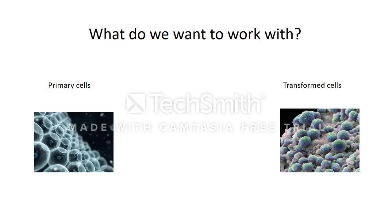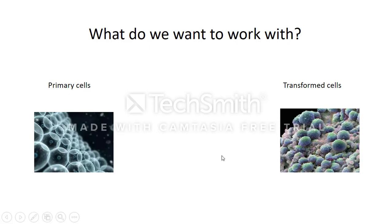Most cells grow asymmetrically. With symmetric division, stem cells can create more stem cells or they can create differentiated cells, but they are not able to create both and continue on with development. When a stem cell creates two differentiated cells, there are no stem cells left, and over time there will be no stem cells left to conduct differential processes needed at certain points in the organism's life.